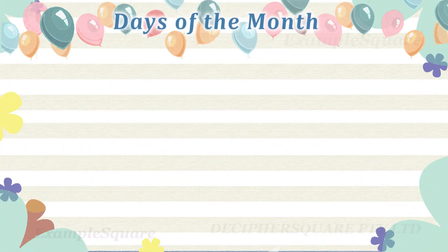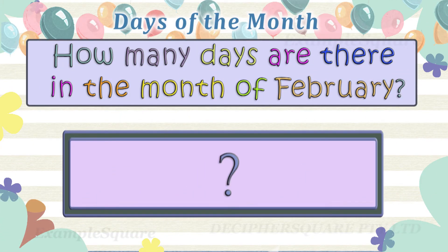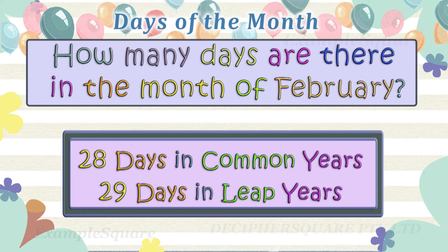How many days are there in the month of February? The month of February can have 28 or 29 days. February has 28 days in common years and 29 days in leap years.